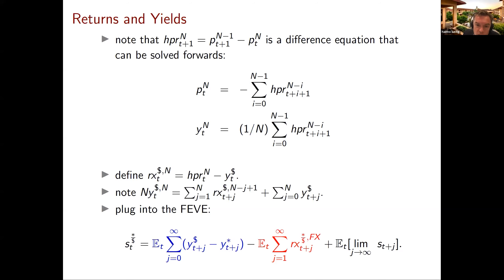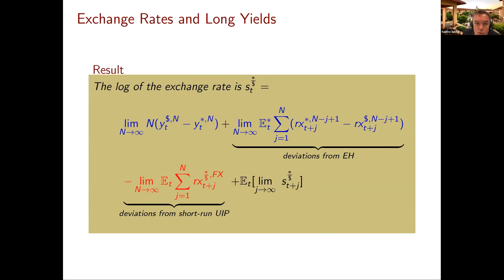What this buys us is we can look at excess returns — the holding period return minus the short-term interest rate — and rewrite the sum of short-term interest rates as long-term yields minus bond risk premia. I can then plug that into the blue component of the fundamental exchange rate valuation equation, substituting for the sum of interest rates. The dollar exchange rate now reflects not short-term interest rates, but the long-term interest rate difference — say, the yield on a 20-year U.S. bond minus the yield on a 20-year German bond.